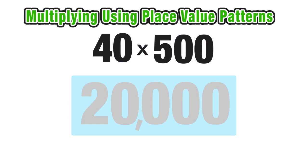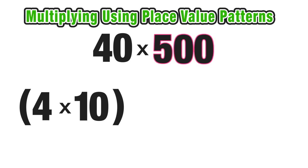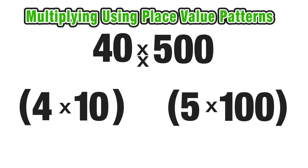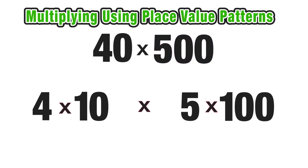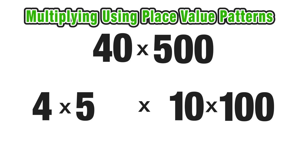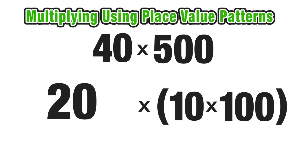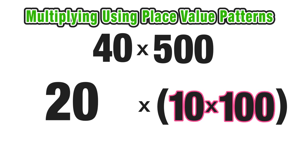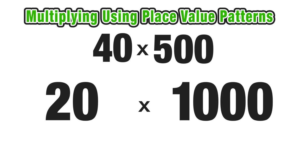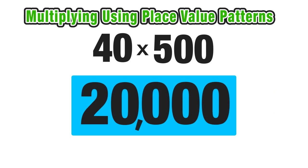Now let's use the associative property as a method of finding and understanding this same product. We can think of 40 as 4 times 10, and 500 as 5 times 100. Since we're multiplying, the associative property allows us to change the order of the numbers — we can switch that 10 and 5 around and multiply this out much more easily. On the left side we have 4 times 5, which is 20. On the right side we have 10 times 100, which equals 1000. To find the final product we multiply 20 times 1000, which equals 20,000 — the product of 40 and 500.